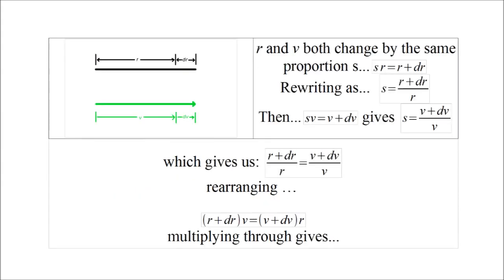Hubble's law says that the further away from Earth you look, the faster space and its content is receding from us. But animation one says there really isn't a difference between space and time — they are two different measuring contexts of the same thing. So if length is expanding, then so is time or speed. We take a length r that changes by some amount dr and a velocity v that changes by dv. Because these are really two different aspects of the same thing, the proportions they change by must be equal. So we write them both as a proportion of s and as a sum: sr equals r plus dr, and sv equals v plus dv. Since we can solve each for the same identical proportion, we can equate them through s, and s goes away. This gives us vdr equals rdv — the violet equation.